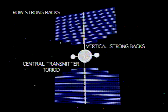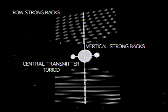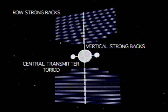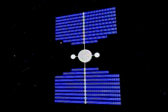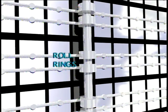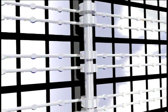The power station's structural elements are the central transmitter toroid, the vertical strongbacks, and the individual horizontal row strongbacks. The power generated in the solar panels is sent on a 40 kilovolt bus to the central strongback through roll rings that each pass 5,000 amperes.